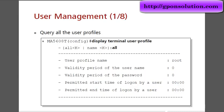For user management, query all user profiles using the display terminal user profile command. Here we see only the root user profile. The profile name is root, validity period of username is 0, and validity period of password is 0 — meaning unlimited, no validity period.